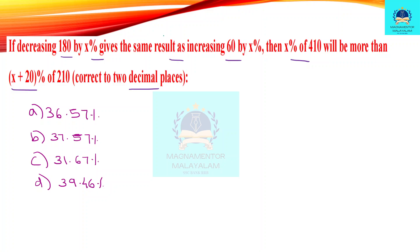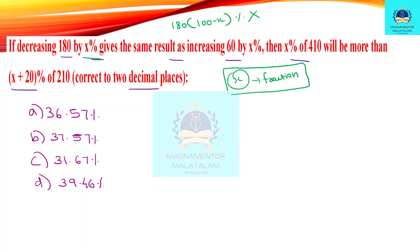If you have the formula: decreasing 180 by x percentage gives 180 into (100 minus x). For x percentage decrease, we take the fraction value. We will take x to 100, meaning we express x as a fraction.